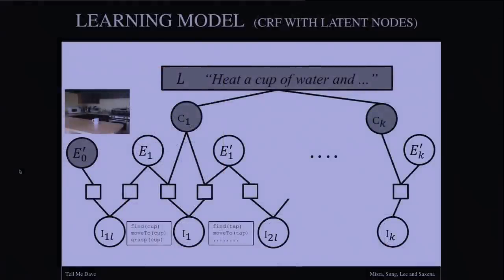In our paper, we propose a following new language grounding approach, which models the relationship between the language, the environment, and the instruction sequence by a CRF with latent node. Here, the top layer L represents the language, which could be a sentence like heat a cup of water, the middle layer E represents the environment, and the bottom layer I represents the instruction sequence. We also introduce this latent instruction node, which is there to handle the missing instruction. The edges here in the CRF model the relationship between these nodes. However, we now needed data to be able to test our model.